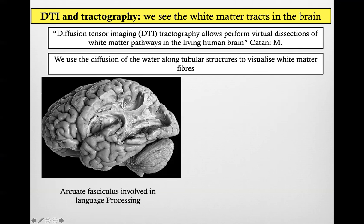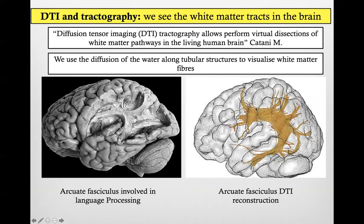The arcuate fasciculus — this is an anatomical view, and this is the arcuate fasciculus on DTI reconstruction. The arcuate fasciculus basically controls language; it's more important on the left. The visualization we have with DTI is very similar to the anatomical dissection on a cadaver, so we can have a virtual dissection in the living human brain.